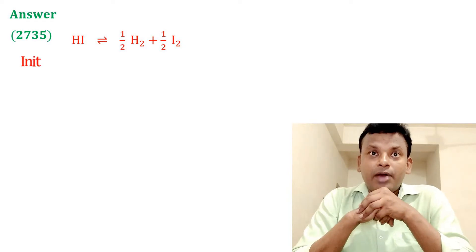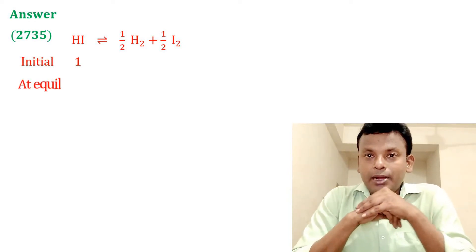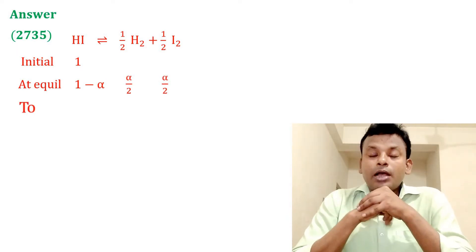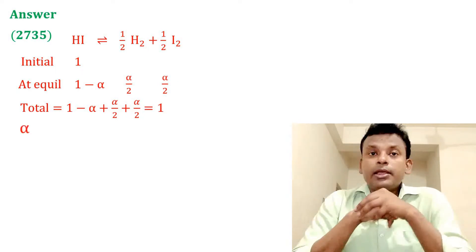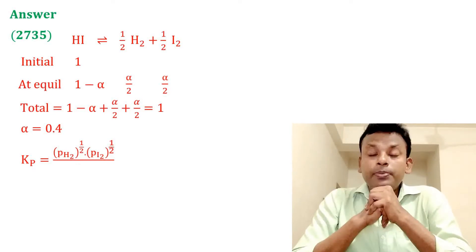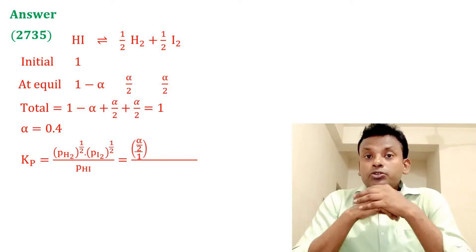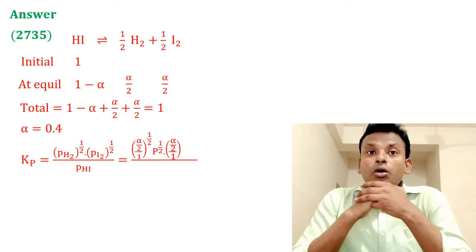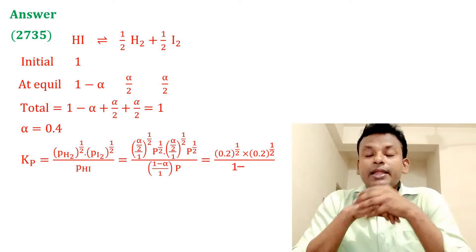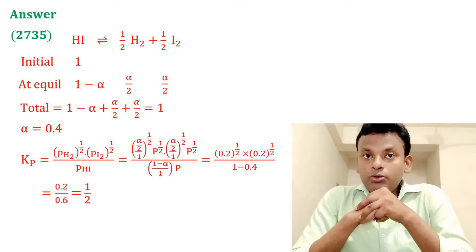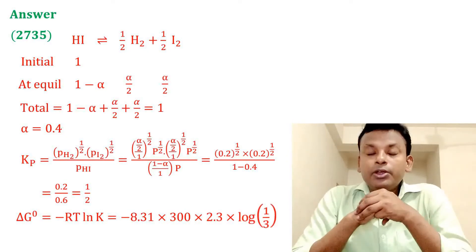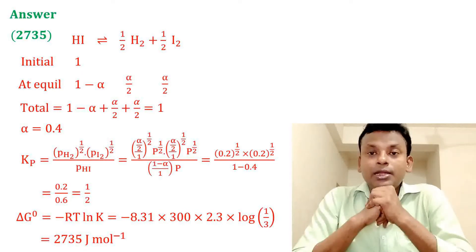Answer is 2735. HI gives half H2 plus half I2. Initially 1; at equilibrium: (1 − α), α/2, α/2. Total equals 1. With α = 0.4, Kp equals P(H2)^0.5 times P(I2)^0.5 divided by P(HI). Putting in all values, Kp equals approximately 1/3. Using ΔG° = −RT·ln(Kp) and putting in all values, ΔG° equals 2735 joules per mole. Answer is 2735.